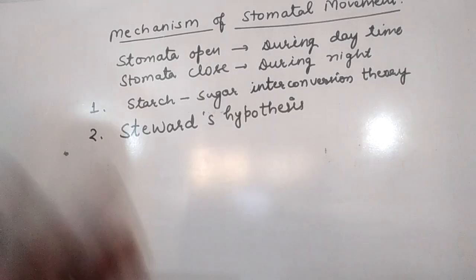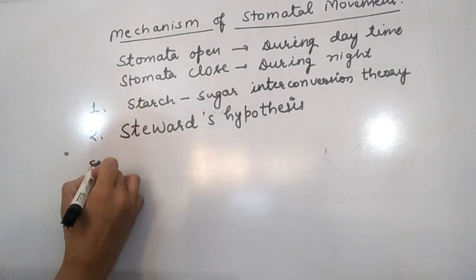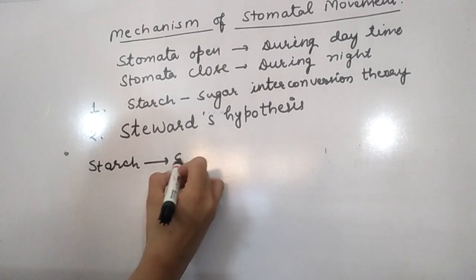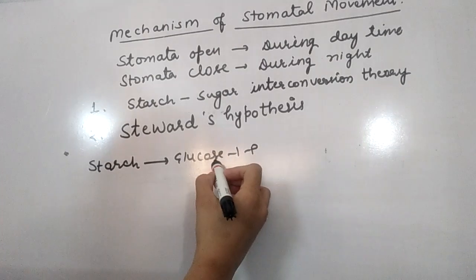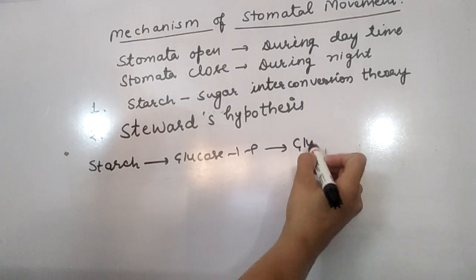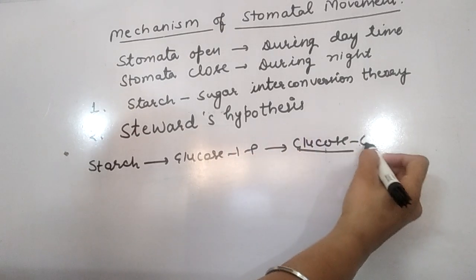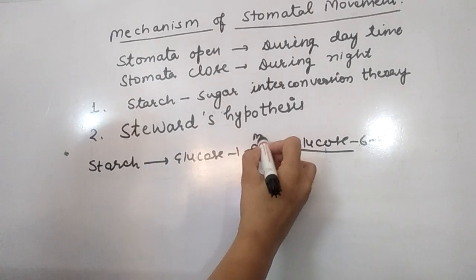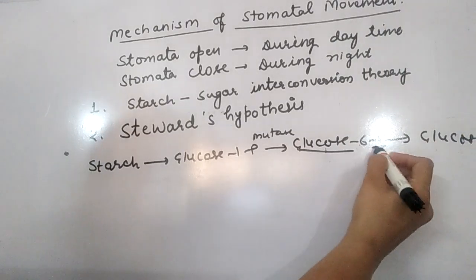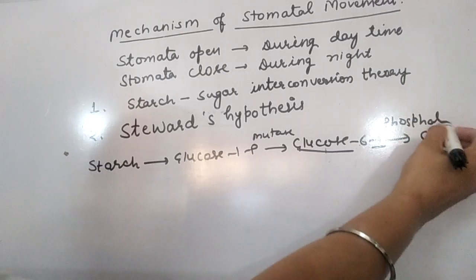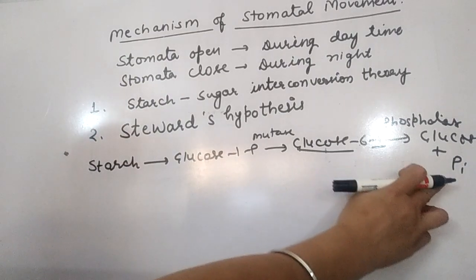Now the next theory. Stewart took Sayre's starch-sugar theory and modified it slightly. Sayre said starch converts into glucose-1-phosphate during daytime. Stewart argued that glucose-1-phosphate alone does not raise osmotic pressure sufficiently. Glucose-1-phosphate is first converted to glucose-6-phosphate in the presence of mutase enzyme, and then glucose-6-phosphate is converted into glucose in the presence of phosphatase enzyme.